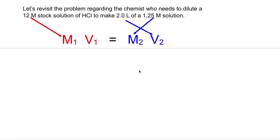So here we have a dilution problem and it looks like we have a 12 molar stock solution of hydrochloric acid and we want to dilute that to make a 1.25 molar solution of the hydrochloric acid. We also want our final volume to be 2.0 liters.